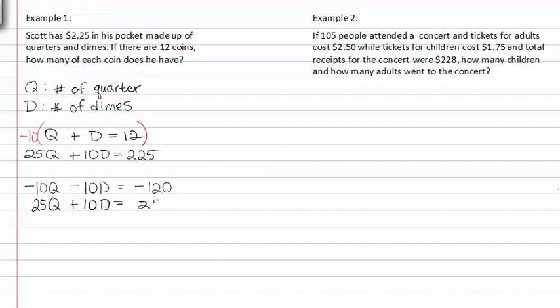This allows us to add the two equations together, and the D terms divide or add to zero. We're left with fifteen Q is equal to one hundred five. If we divide by fifteen on both sides, we get Q is equal to seven.